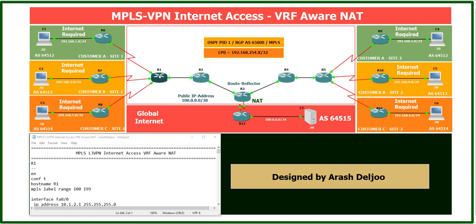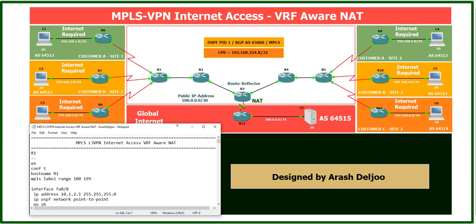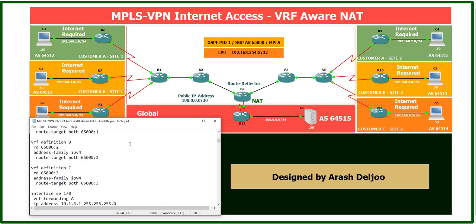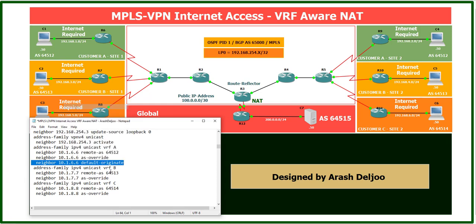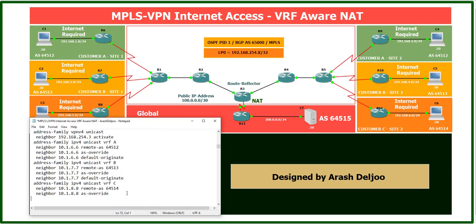In the next step we need to advertise a default route from R1 to R6, R7, R8, and from R5 to R9, R10, R11. We can do this via BGP using 'neighbor default-originate'. In R1 we have three VRFs — VRF A, B, and C — with BGP configured. For VRF A, the command is: neighbor 10.1.6.6 default-originate, neighbor 10.1.7.7 default-originate, and neighbor 10.1.8.8 default-originate.